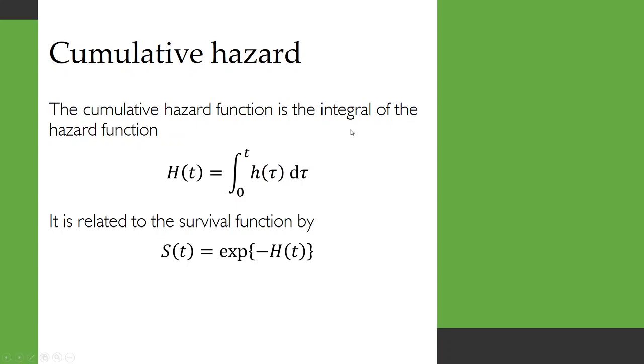The cumulative hazard function is the integral of the hazard function over time. So capital H is equal to the integral from 0 to t of little h(tau) with respect to tau. And that's related to the survival function by this equation here. So the survival function is equal to e to the power of minus capital H.